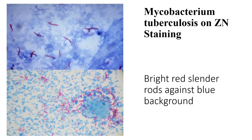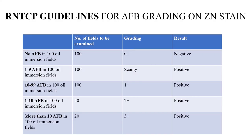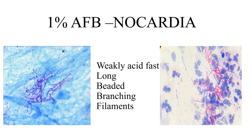Mycobacterium tuberculosis bacteria are seen as bright red slender rods against a blue background. There are RNTCP guidelines for AFB grading. A 1% acid-fast bacilli staining is used to stain Nocardia, which is weakly positive; they are seen as long beaded branching filaments. This is an example of a report of a KOH and gram staining of a patient, which has a turnaround time of within an hour and is informed to the clinician. The culture report is sent on the subsequent day.